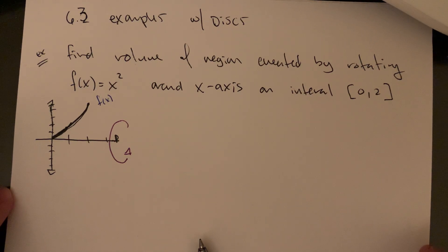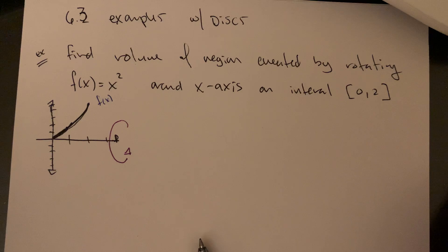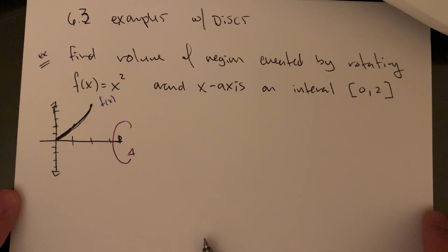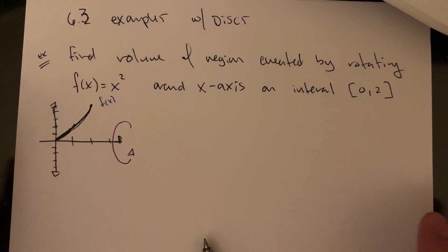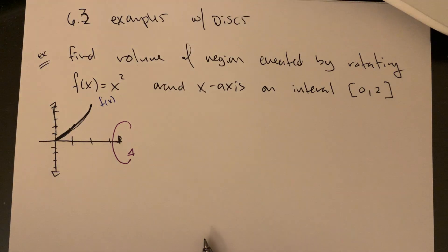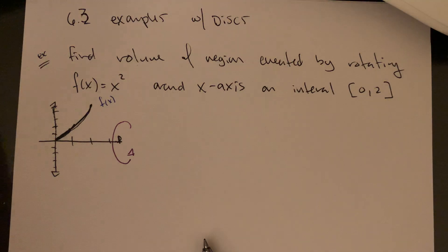All right, let's pick up right where we left off. I've recreated the example that we were getting into at the end of the last video. So let's dig deep on that. We want to find the volume of the region created by rotating f(x) = x² around the x-axis, on the interval from 0 to 2.